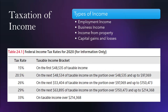First you have employment income — just all the income you are earning from your actual job. Then you have business income, so money you are making from your business, income from property like rent, and then you have capital gains and losses. Those are the four types of income, and now we'll look at the different tax brackets.